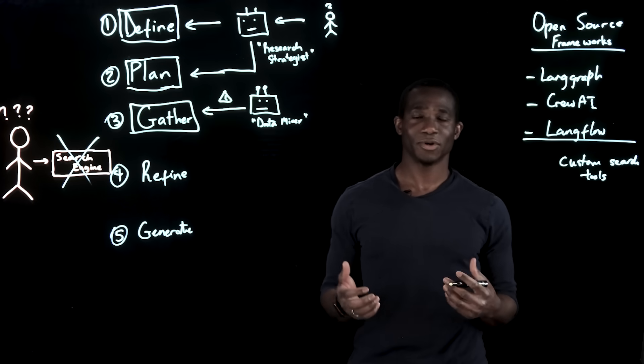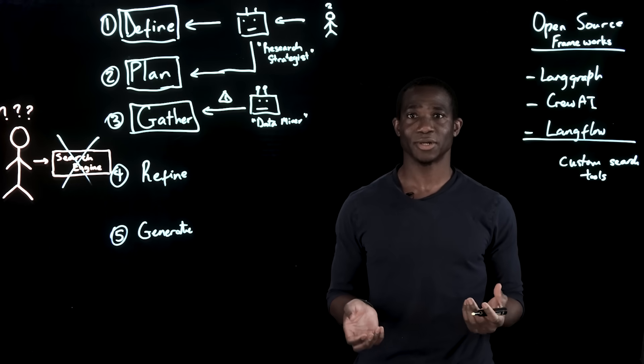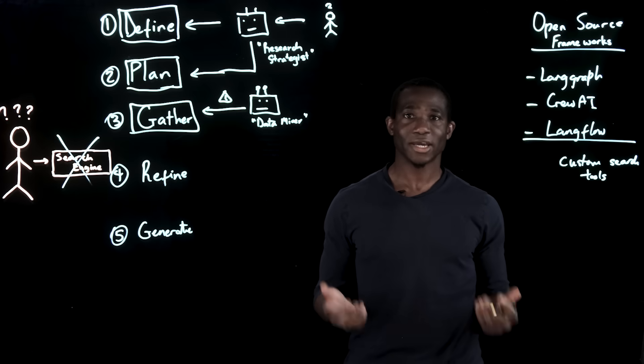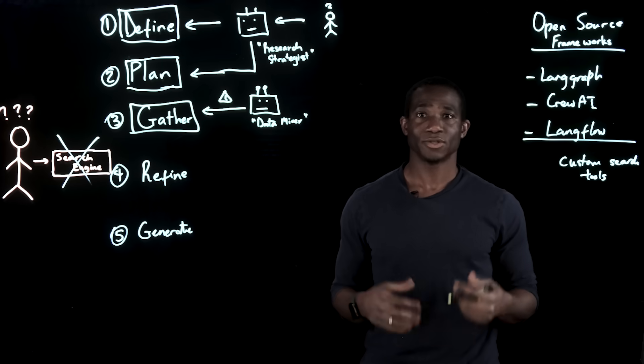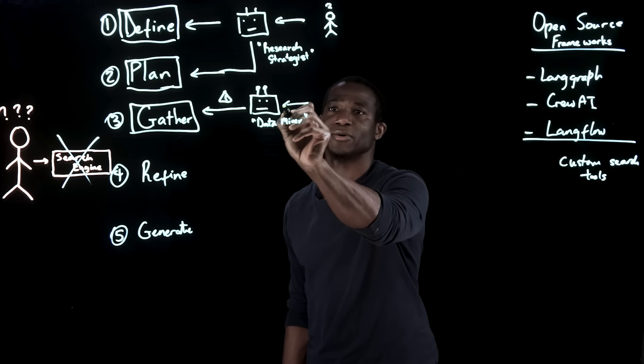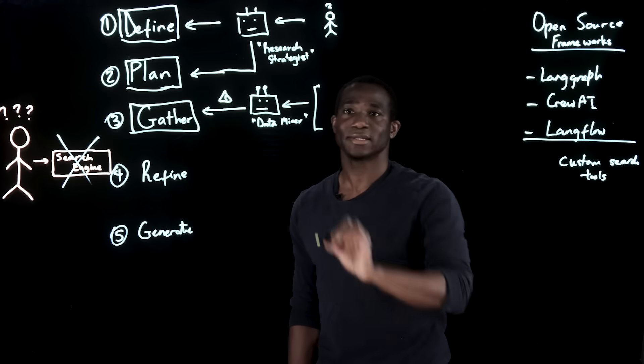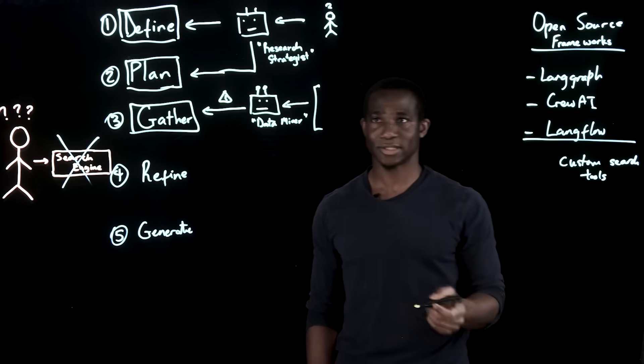A misleading paper is worse than no paper at all. AI systems are vulnerable to data poisoning, misinformation, and manipulation. And so we must ensure the accuracy and trustworthiness of the final output, especially at this phase.